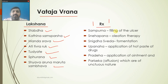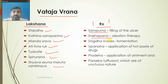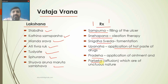The treatment for Vataja Vrana by Shamana Aushadhi includes Sampurana - filling up of the ulcer - Snehapana, which is oleation therapy both internally and locally (Sthanika Sneha). Snigdha Sweda can be done, Upanaha Sweda which is application of coat paste of drugs, Kradeha can be applied, and Parishek or affusion with unctuous substances can be applied in Vataja condition of Vrana.